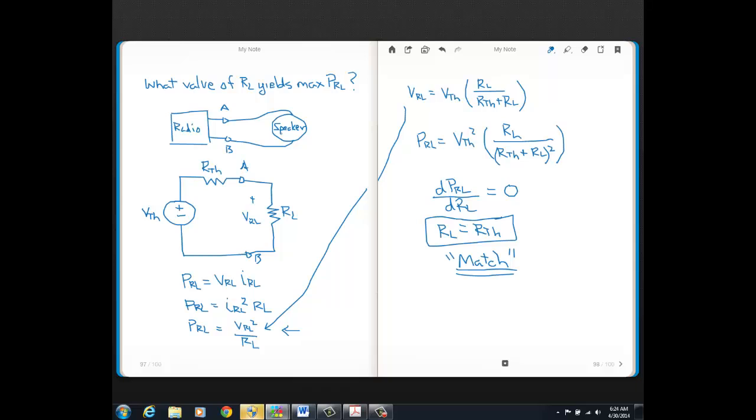That doesn't mean if you hook up a speaker that has a different number of ohms than what the Thevenin resistance is that you still won't get sound. I mean, you'll still get sound from the speaker, but it won't sound the best. Maximum power is when you get the best fidelity in a situation like this. And there's other similar examples. Another quick one is if you have a transmission device, say like a cell phone, and you consider the antenna to be the load. When you get max power to an antenna, that's when you get the best transmission or the best reception. So you would have maximum bars on your cell phone when you have a match.